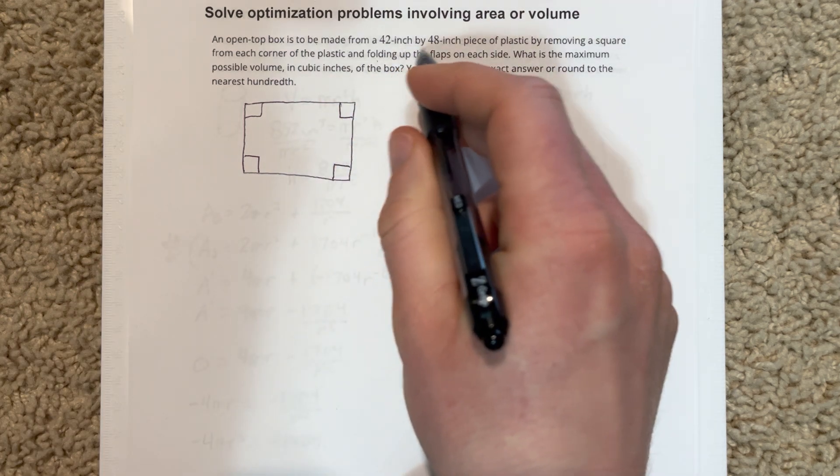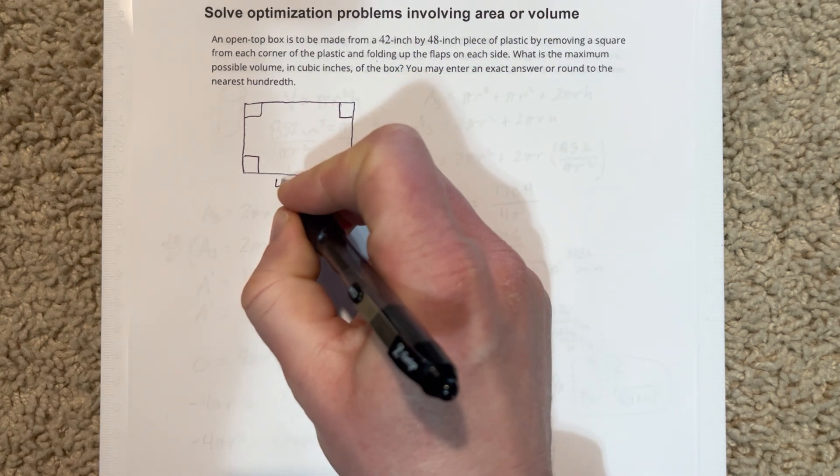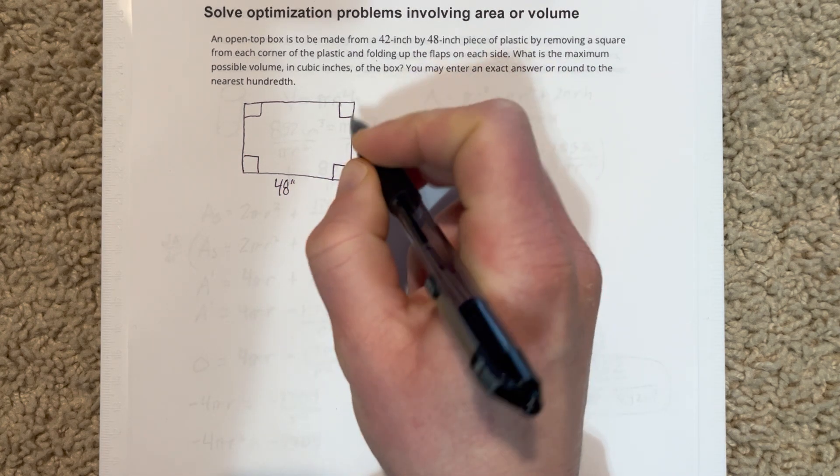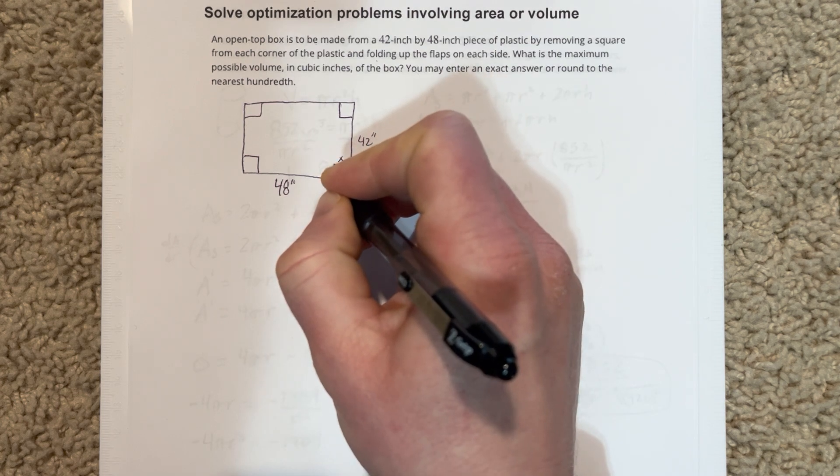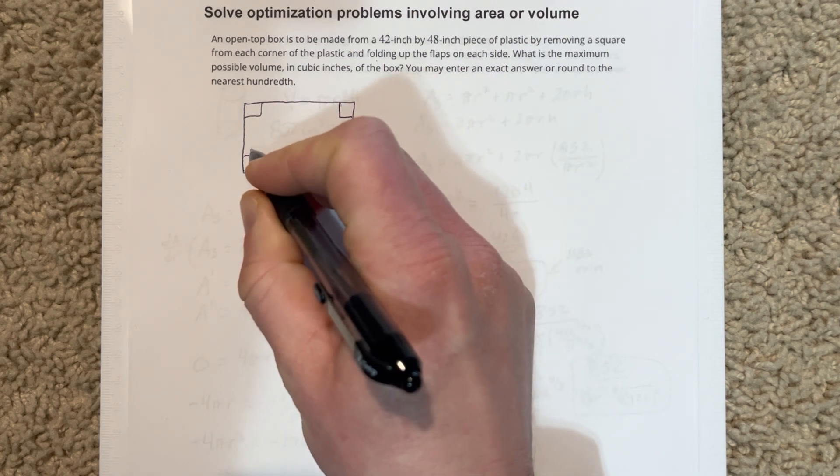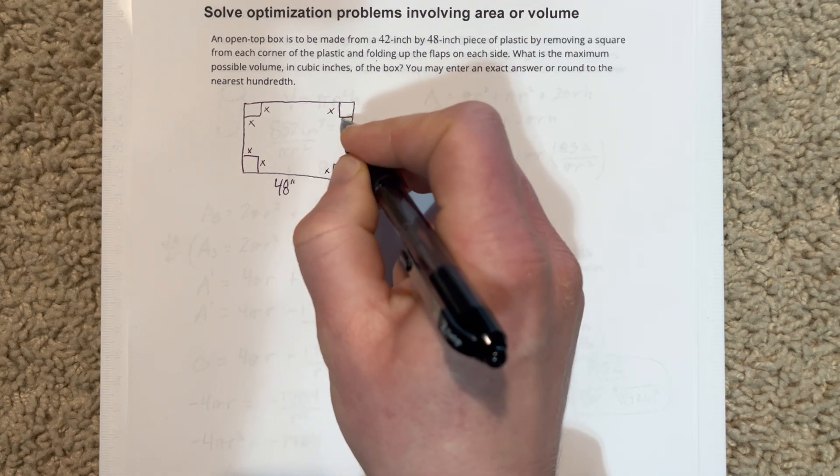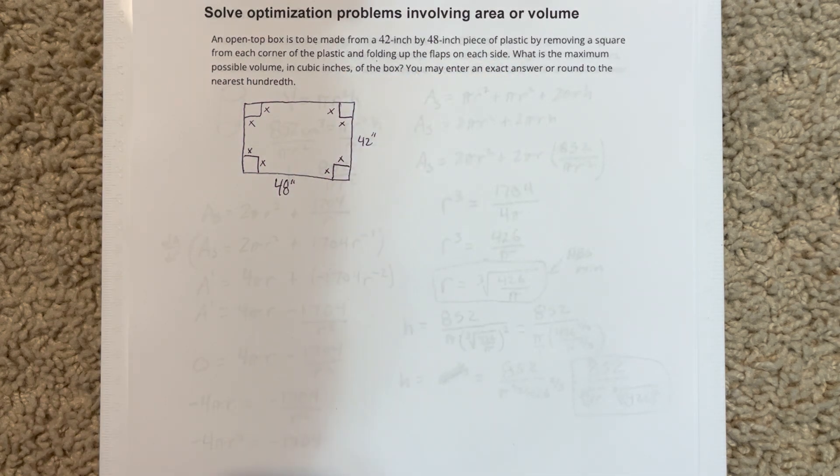So we've got a 48 inch by 42 inch piece. So we're going to say that this is 48 inches, this is 42 inches, but then these have some side lengths here, these little tabs. We really don't know what those tabs need to be for width and height in order to fold this up and get the maximum volume. So what we're searching for here is X. How big, how high, basically what's the height of this box?